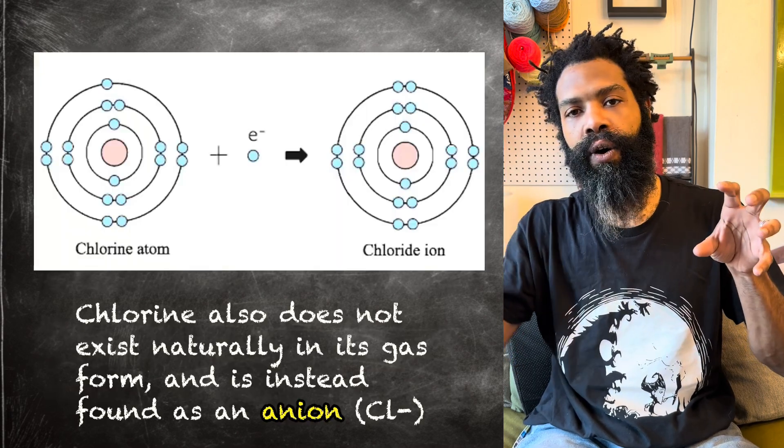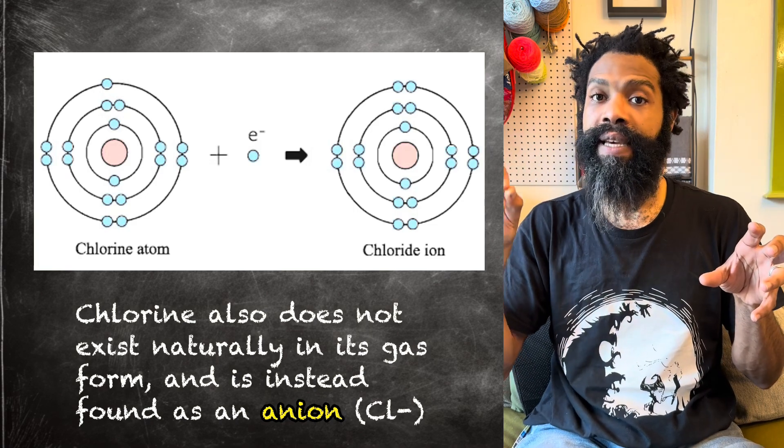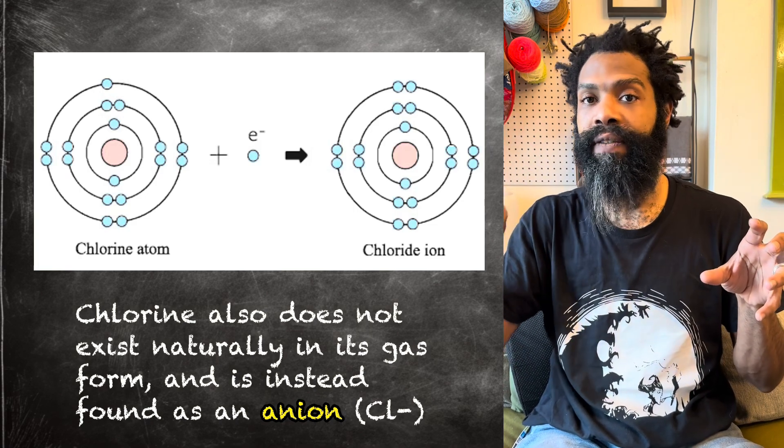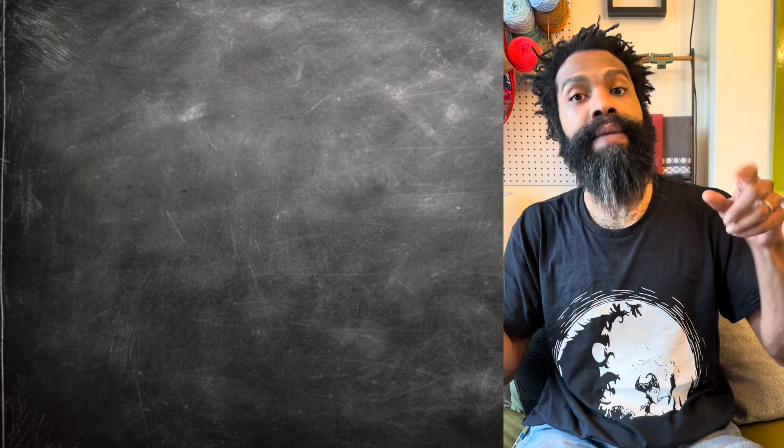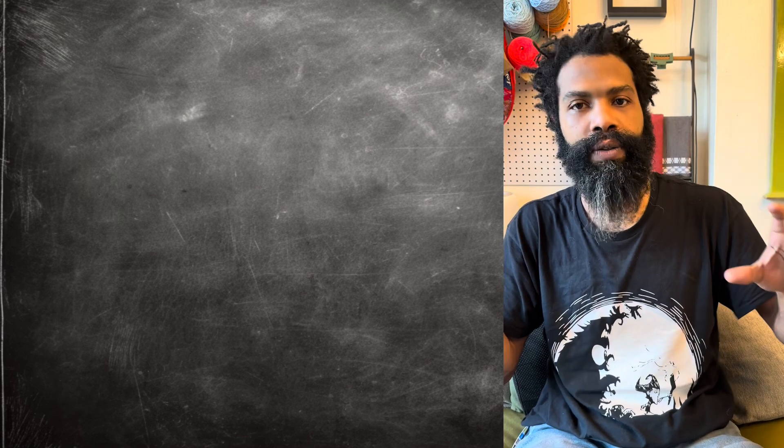And then another thing, we'll say chloride, has an extra electron. That one extra electron gives it a whole full negative charge. Sodium is the opposite. It's missing an electron, so it has a positive charge because it needs one more electron to be fully neutral.